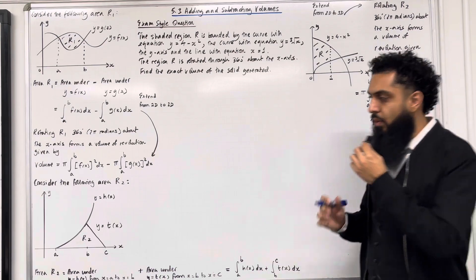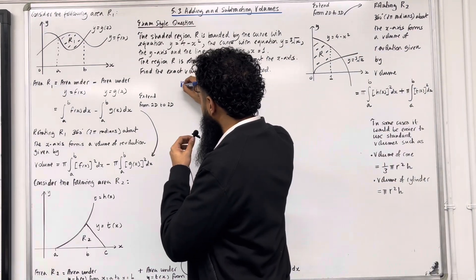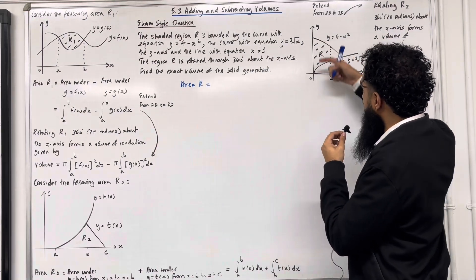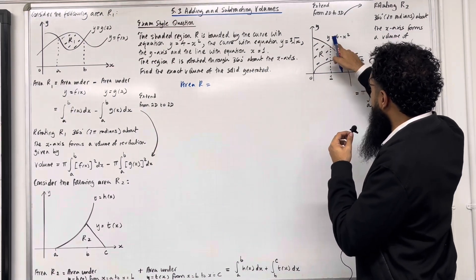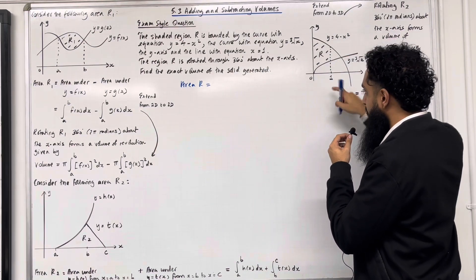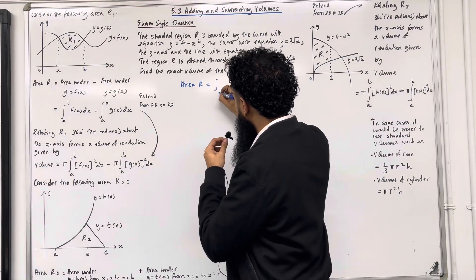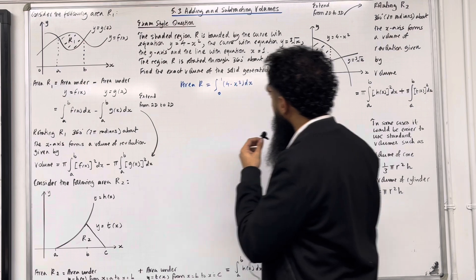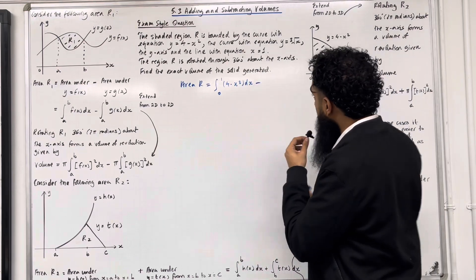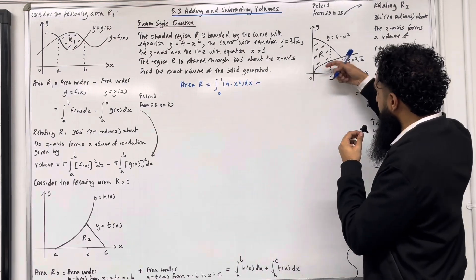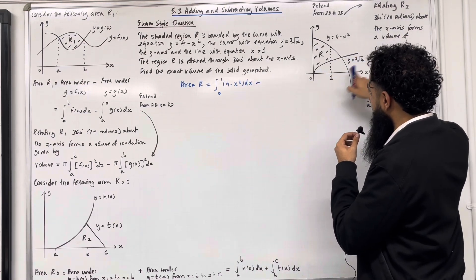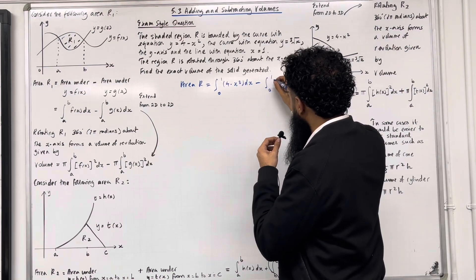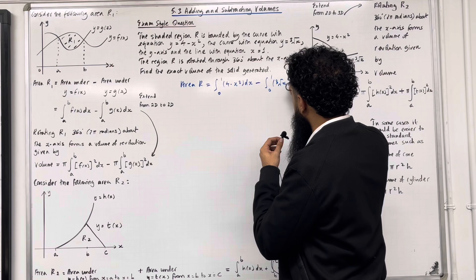To work out the area R, I need to work out the area under the curve y = 4 − x² from 0 to 1, so the integral from 0 to 1 of (4 − x²) dx, take away the area under the curve y = ∛x from 0 to 1, so the integral from 0 to 1 of ∛x dx.